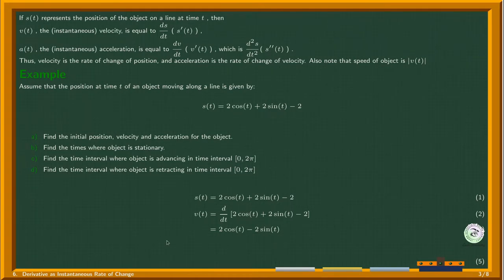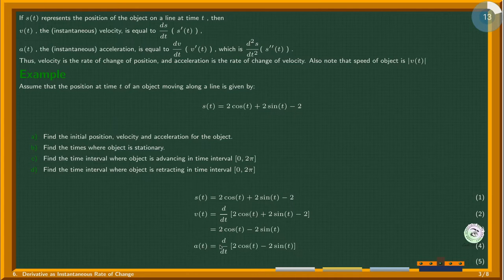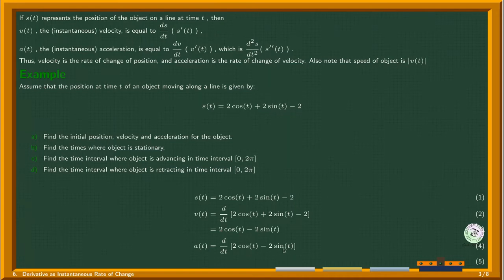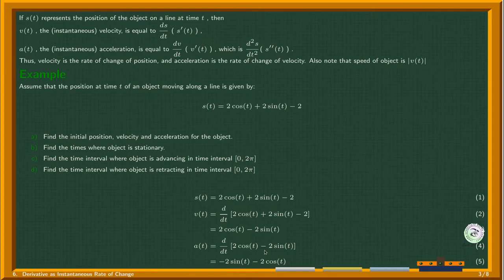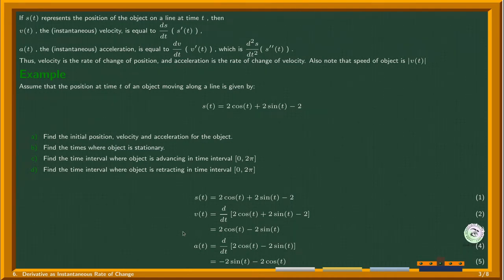Now to get the acceleration, we differentiate the velocity with respect to t. The derivative of cos becomes negative sine and the derivative of sine becomes cos, so both terms will have a negative sign. This gives us the acceleration a(t) — there is an additional negative because the derivative of cos is negative sine, and the derivative of sine is just cos. So as soon as we know the position, velocity, and acceleration, we have everything needed to analyse the motion of this object.